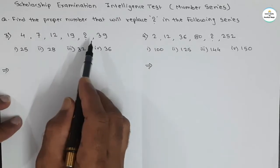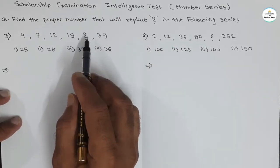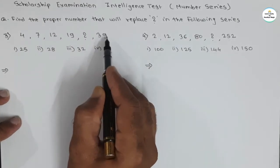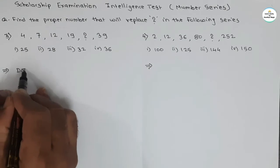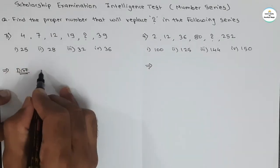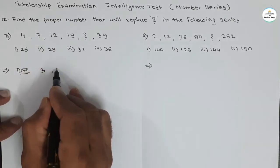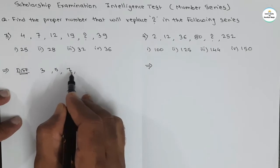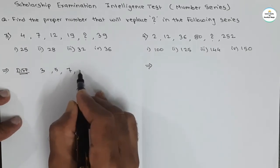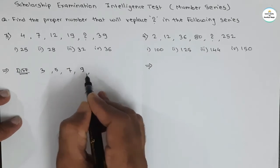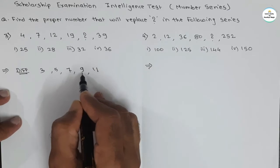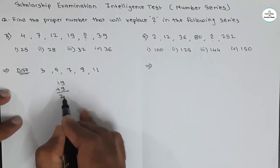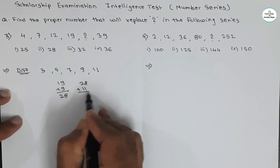Now see our third series. The series is 4, 7, 12, 19, question mark, 39. We have to replace the question mark with the proper number. If we take the difference: 4 and 7, difference is 3; 7 and 12, difference is 5; 12 and 19, difference is 7. The differences are increasing by 2: 3, 5, 7. If we take this rhythm, the next difference must be 9, and then 11. So 19 plus 9 gives 28, and 28 plus 11 gives 39.